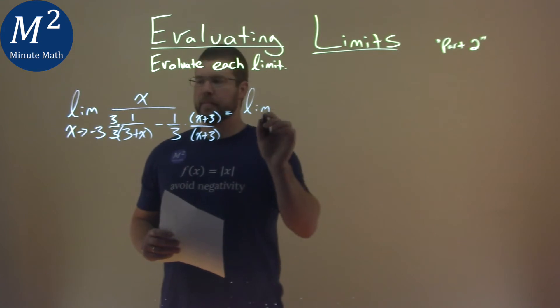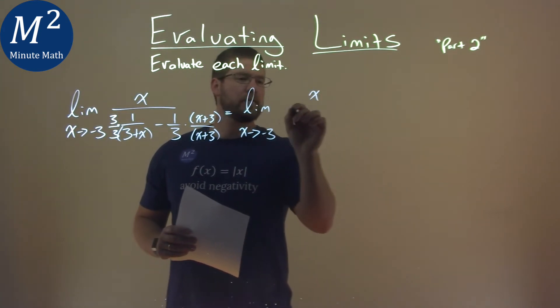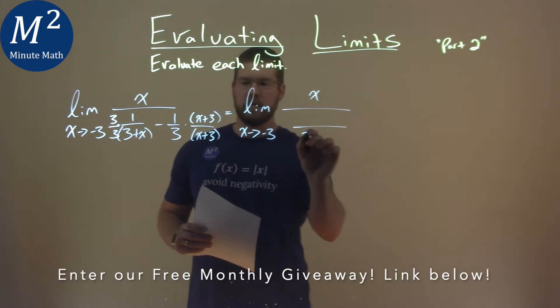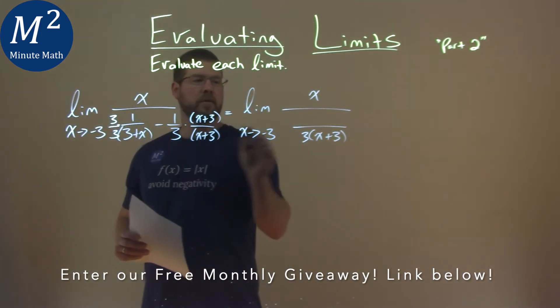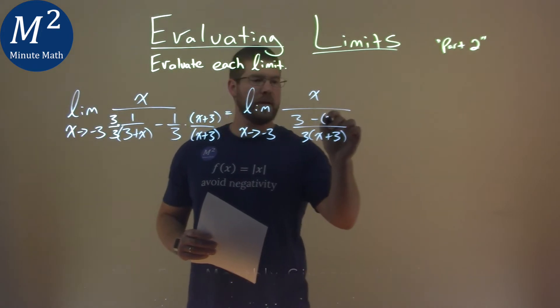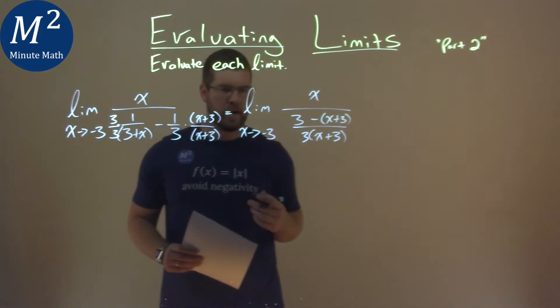We have the limit as x approaches negative 3 of x over... Now notice we'll have the same denominator, 3 times x plus 3. The numerator is just 3 minus this x plus 3, like so, because 1 times x plus 3 is x plus 3.